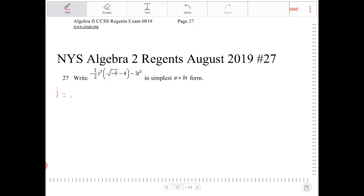So i is simply radical of negative one. If I have i squared, that will be negative one.